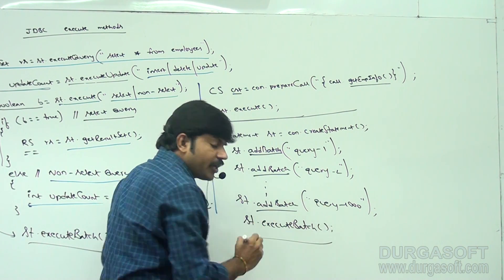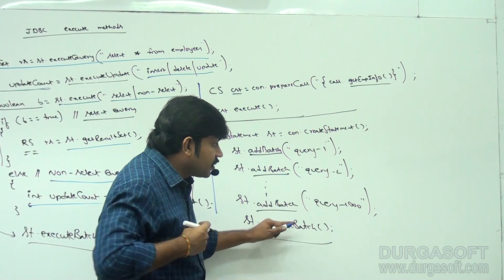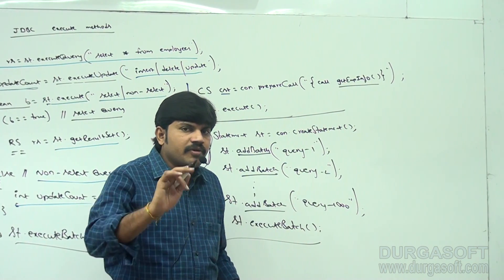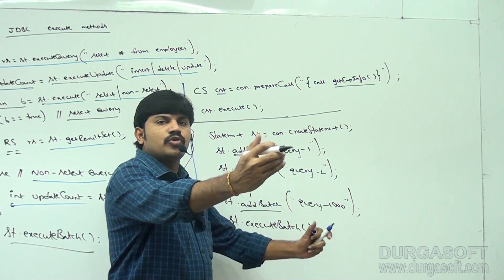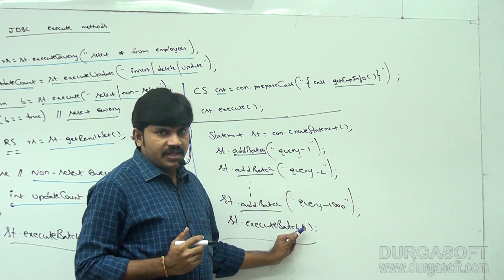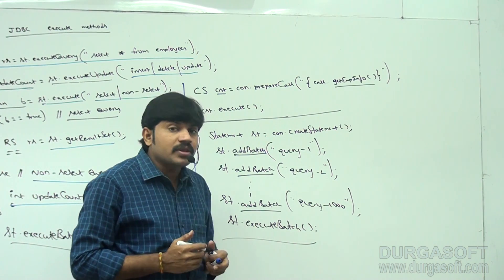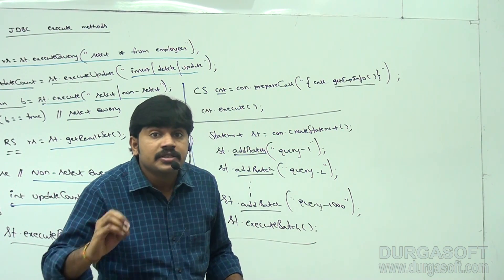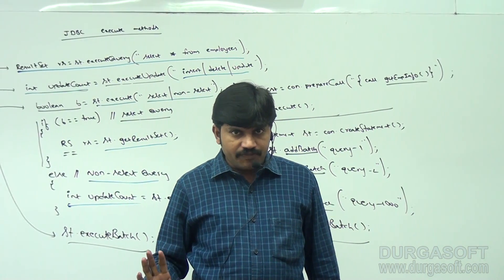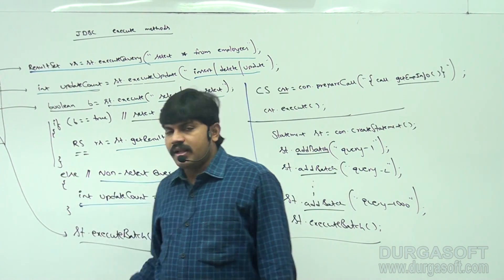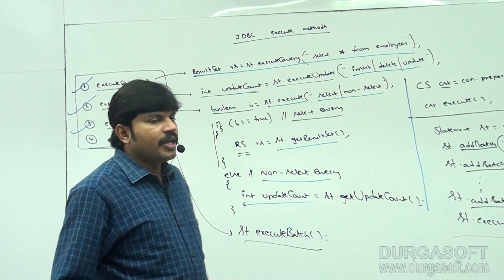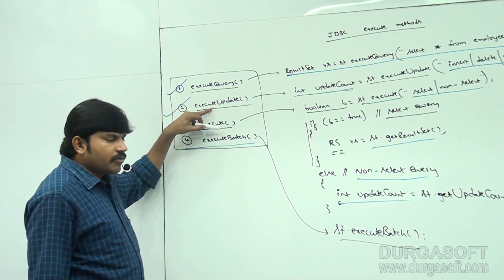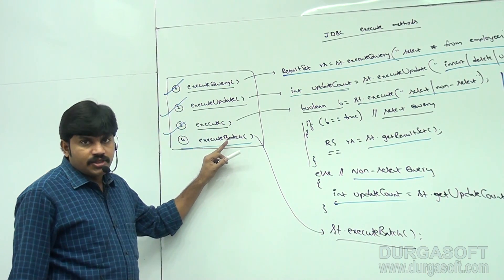So the fourth execute method in JDBC is executeBatch. In total, JDBC has four execute methods: executeQuery, executeUpdate, execute, and executeBatch. executeQuery is applicable only for SELECT queries. executeUpdate is applicable for non-SELECT queries. execute can be used to execute individual queries — both SELECT and non-SELECT — and also to execute stored procedures.